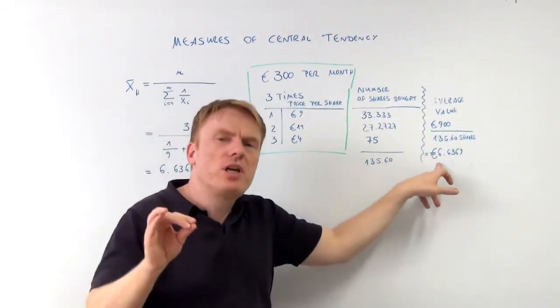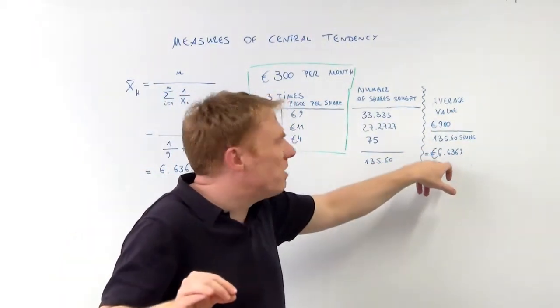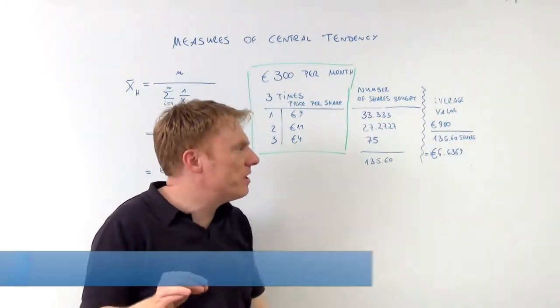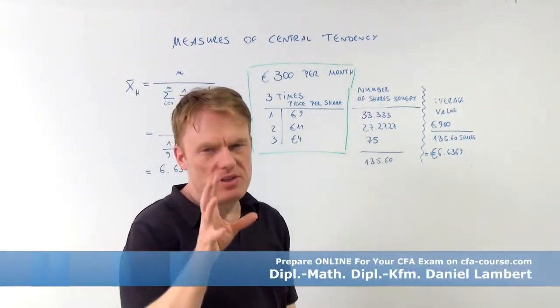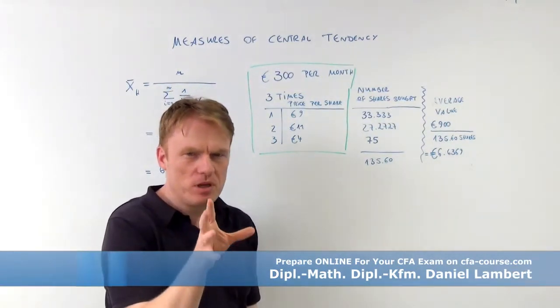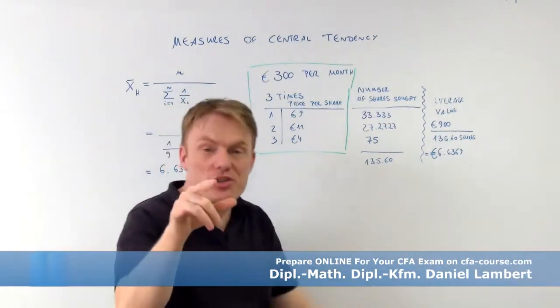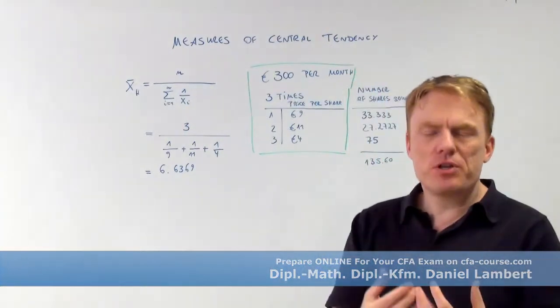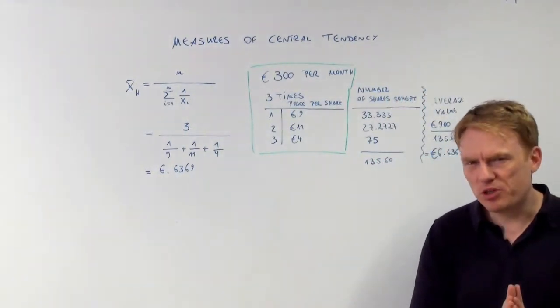Meaning that per share you have 6.64 euros. 6.64 euros per share is the average price per share.